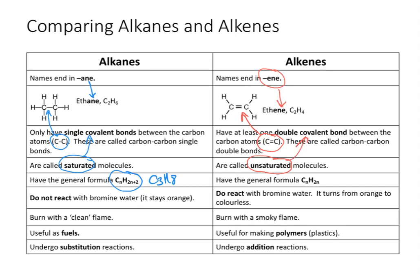Because of this double bond, we call it an unsaturated molecule. The double covalent bond between two carbon atoms results in it being called an unsaturated hydrocarbon. Alkenes have the general formula CnH2n, where n equals the number of carbon atoms. For ethene, n is 2, so 2n gives H4 — C2H4. For three carbon atoms, n is 3, so 2 times 3 is 6, giving us C3H6.